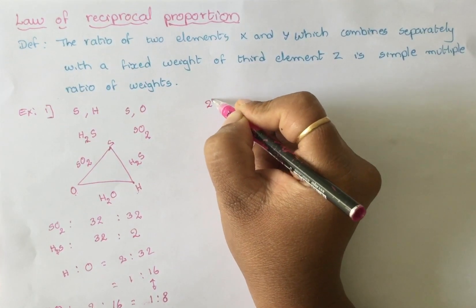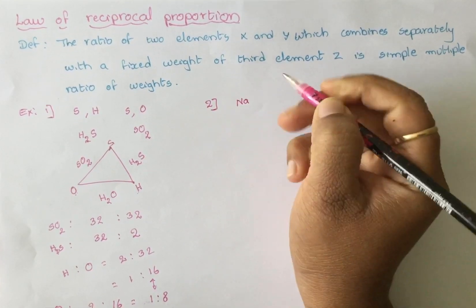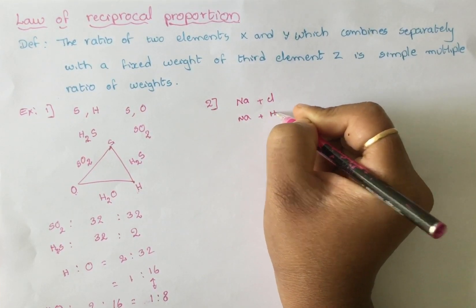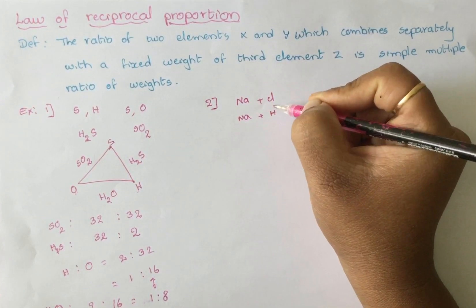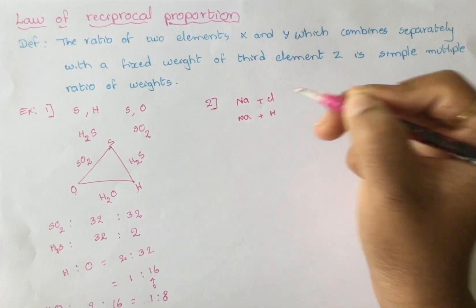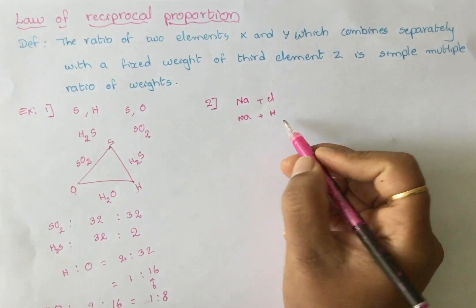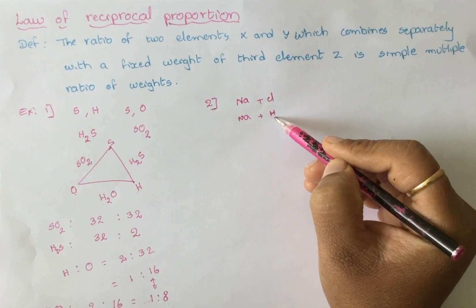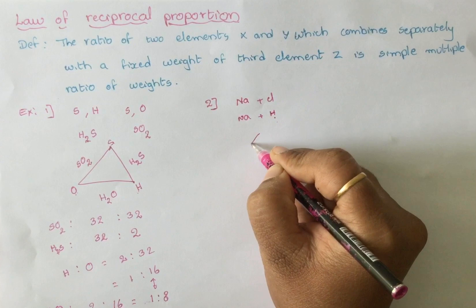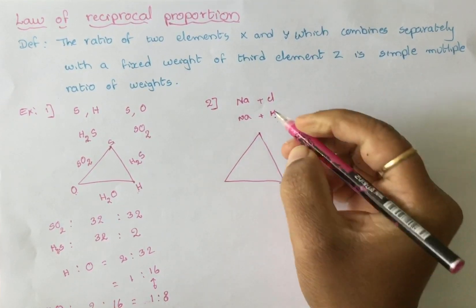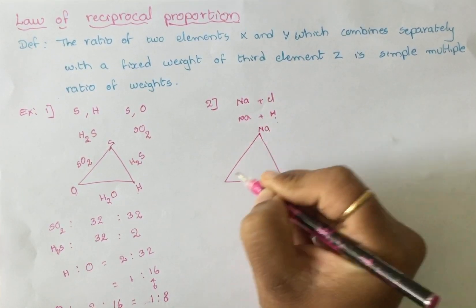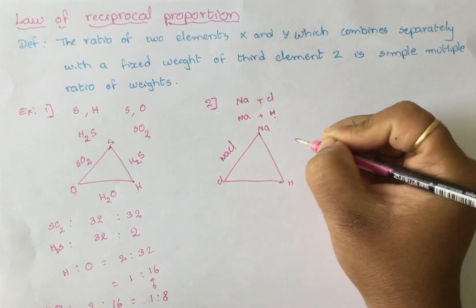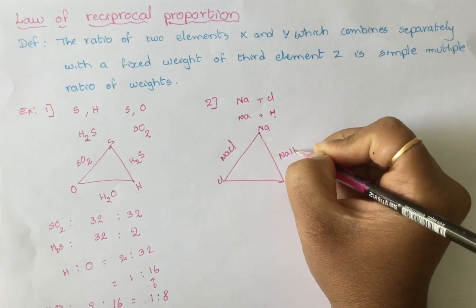Let me explain with one more example. Sodium can combine with chlorine, and sodium can also combine with hydrogen. Here, chlorine and hydrogen are x and y, combining commonly with z, which is sodium. Whenever these two want to combine, they should be in a fixed whole number ratio. Sodium and chlorine combine to form sodium chloride; sodium and hydrogen combine to form sodium hydride.